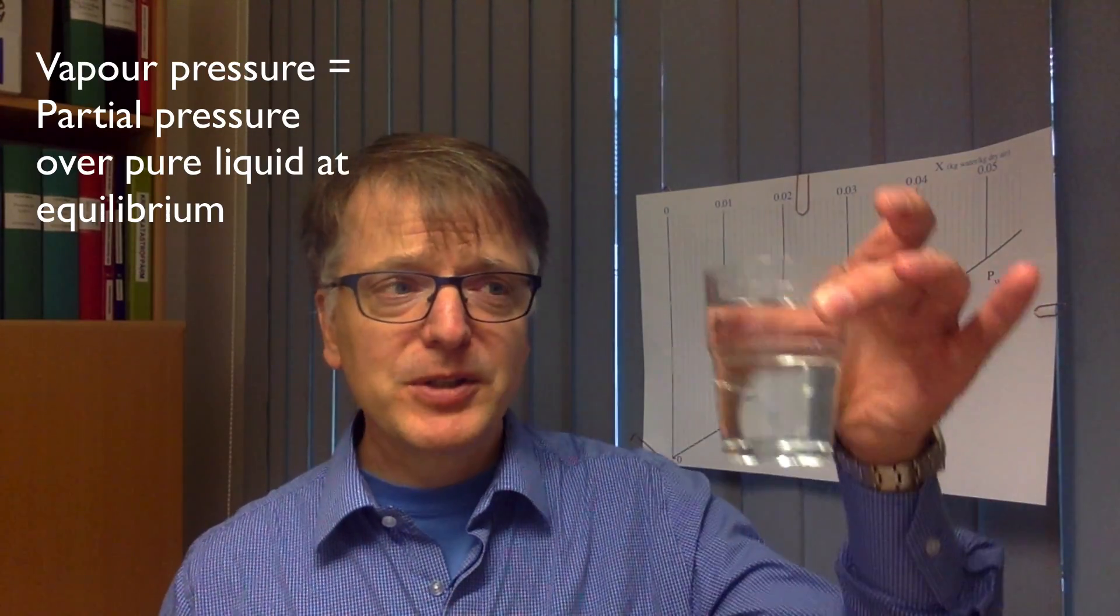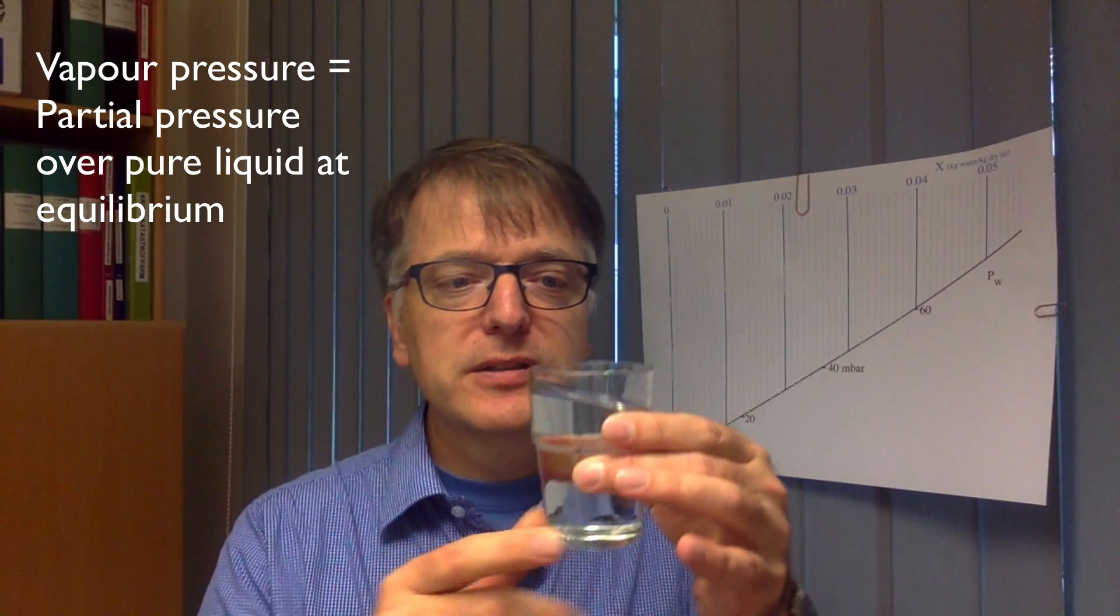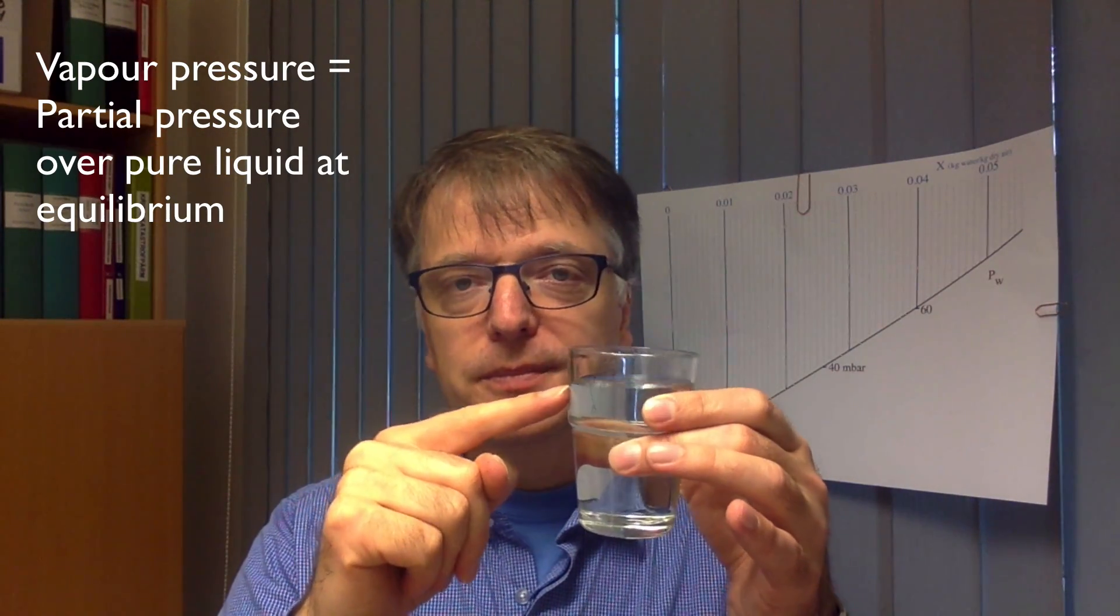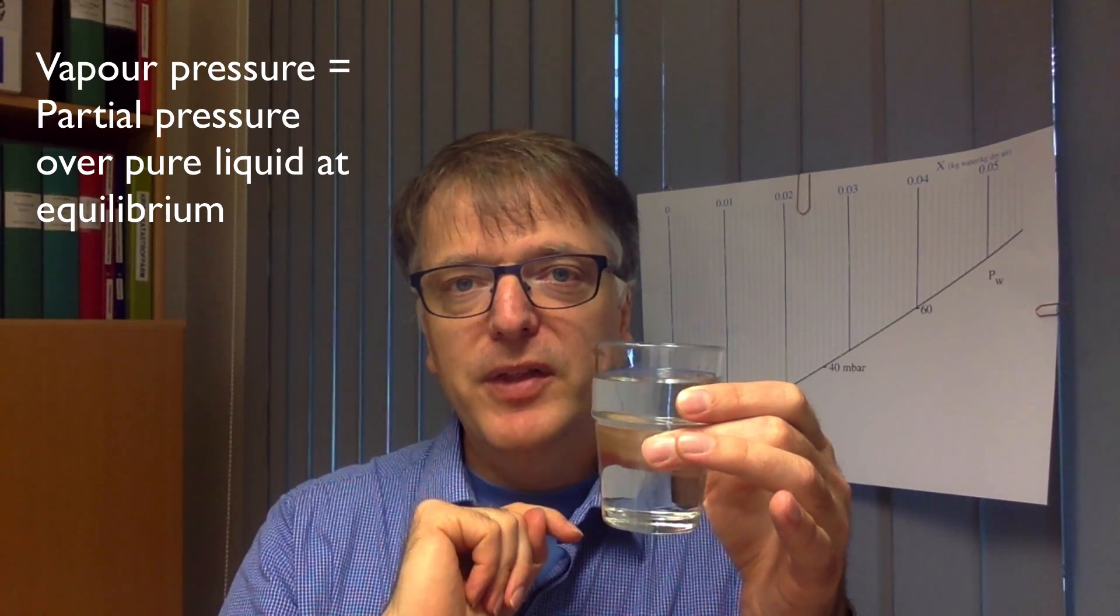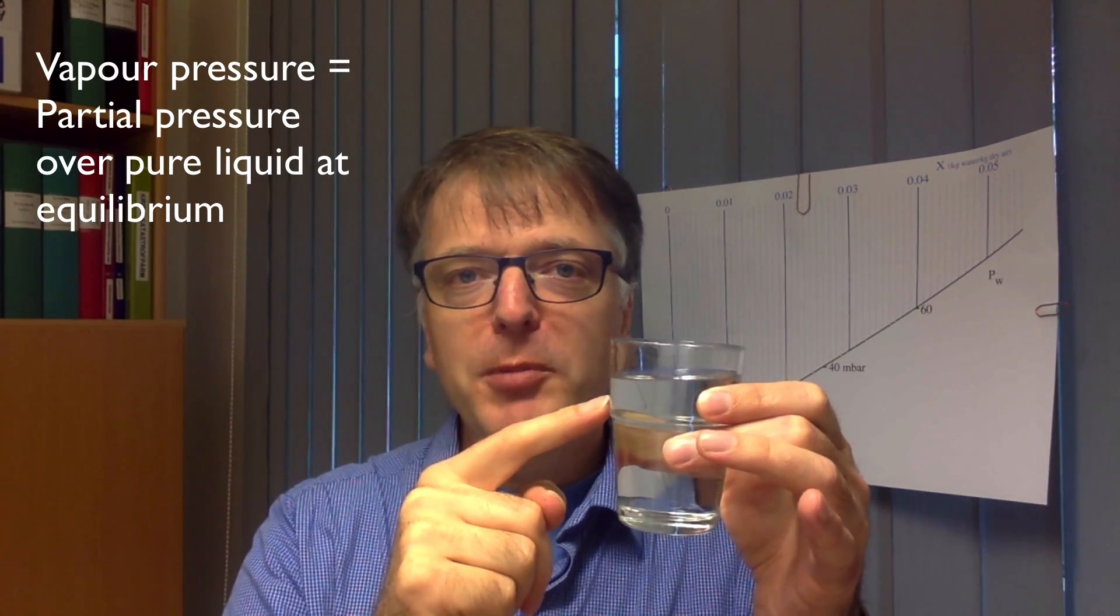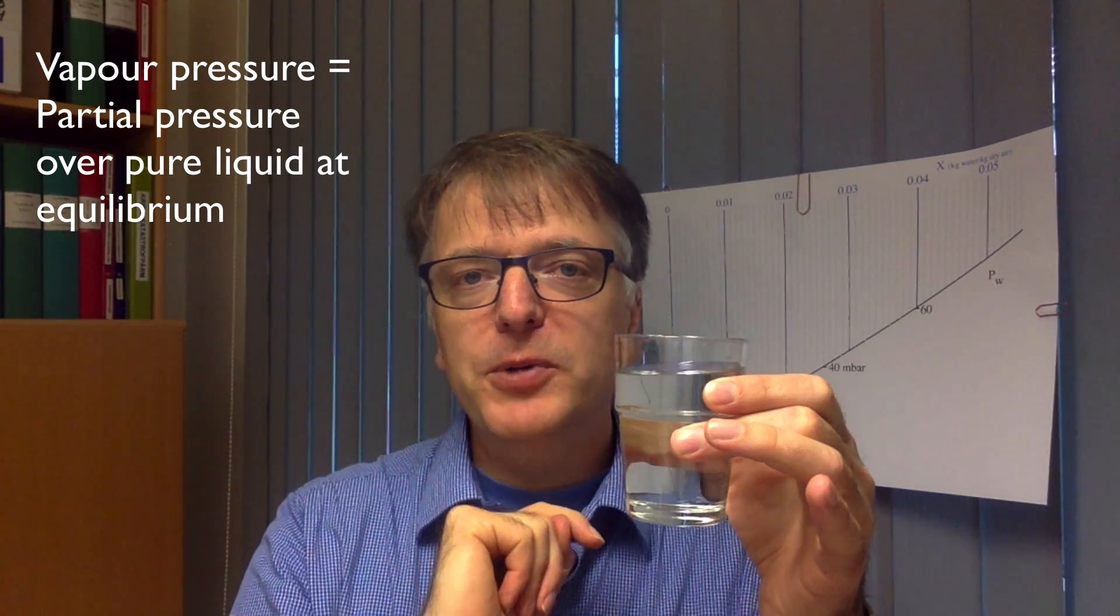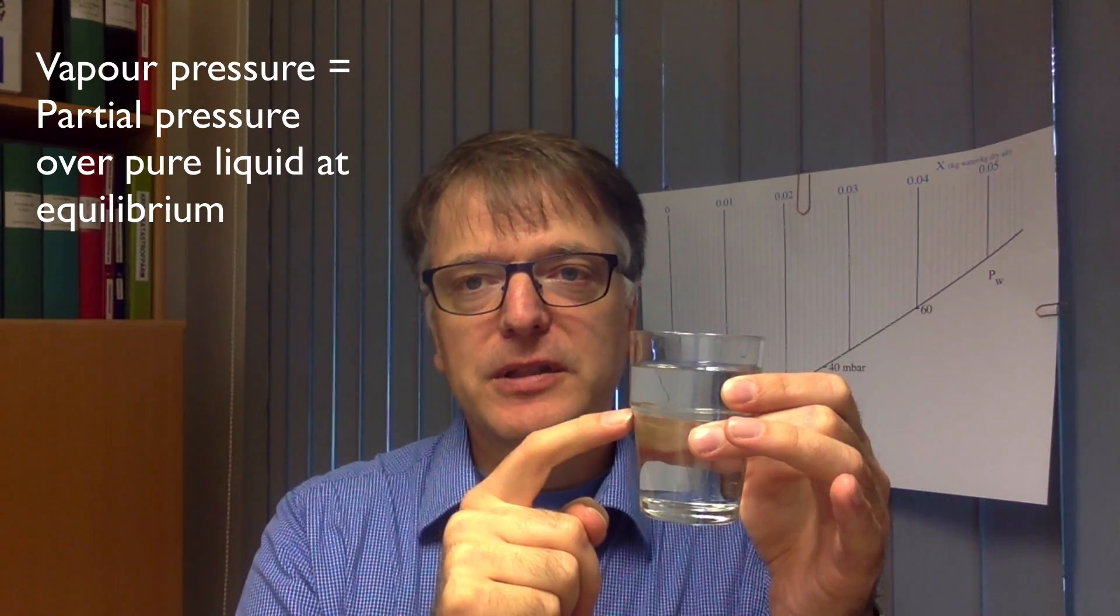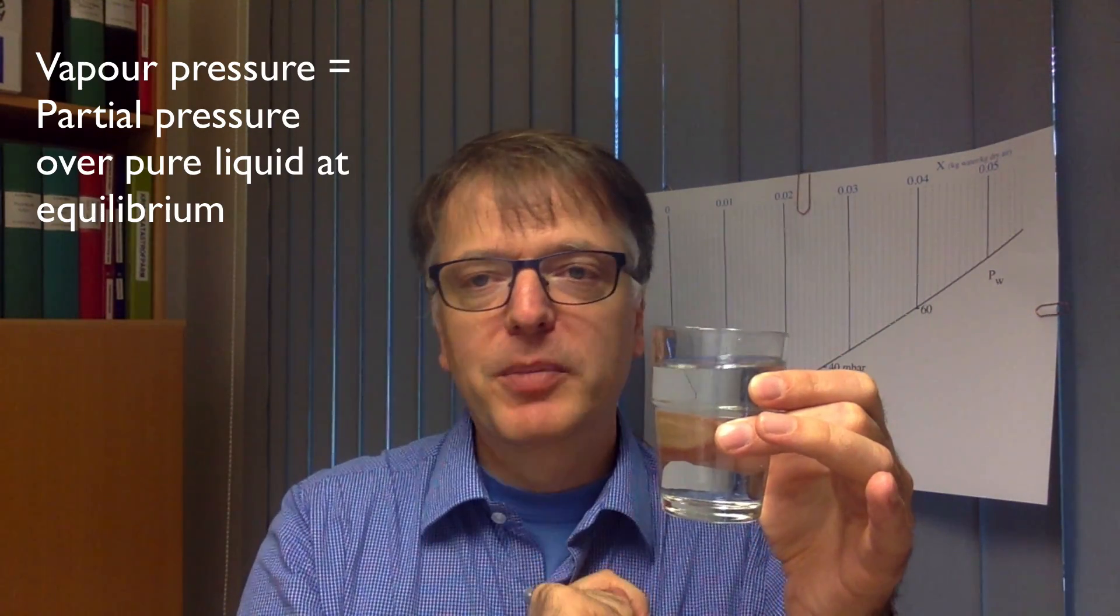And to understand how this system works, we're going to talk about the vapor pressure. The vapor pressure tells us if you have a liquid here and the gas above that, that liquid is in equilibrium with, then the vapor pressure tells you the partial pressure of that substance immediately above the surface.